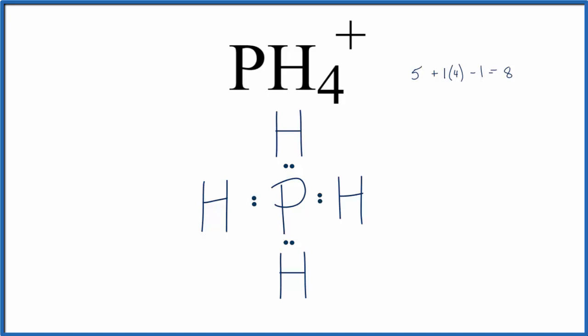And then the phosphorus, there's 8 valence electrons around it. It has an octet. And we've used these 8 valence electrons. We've used all of them.